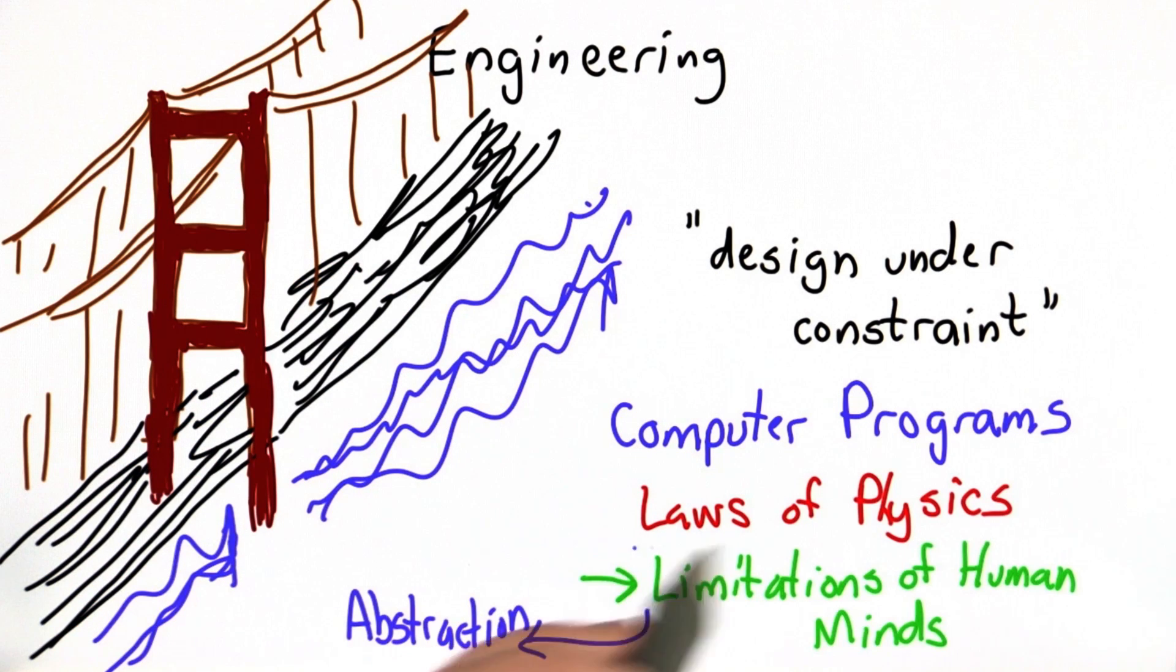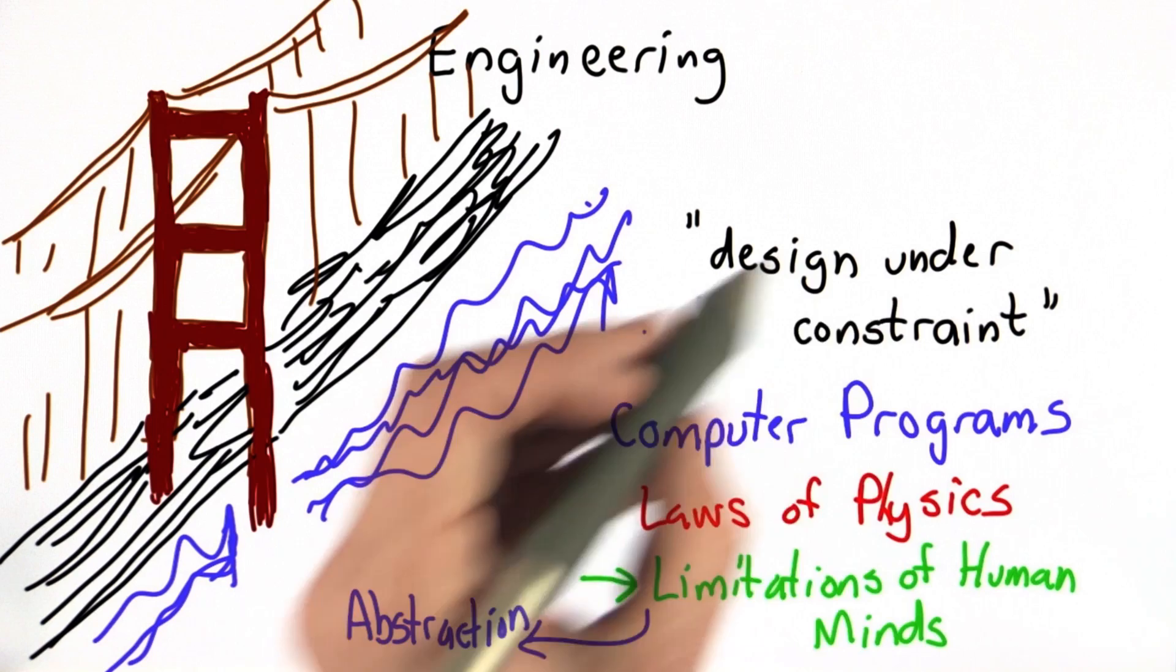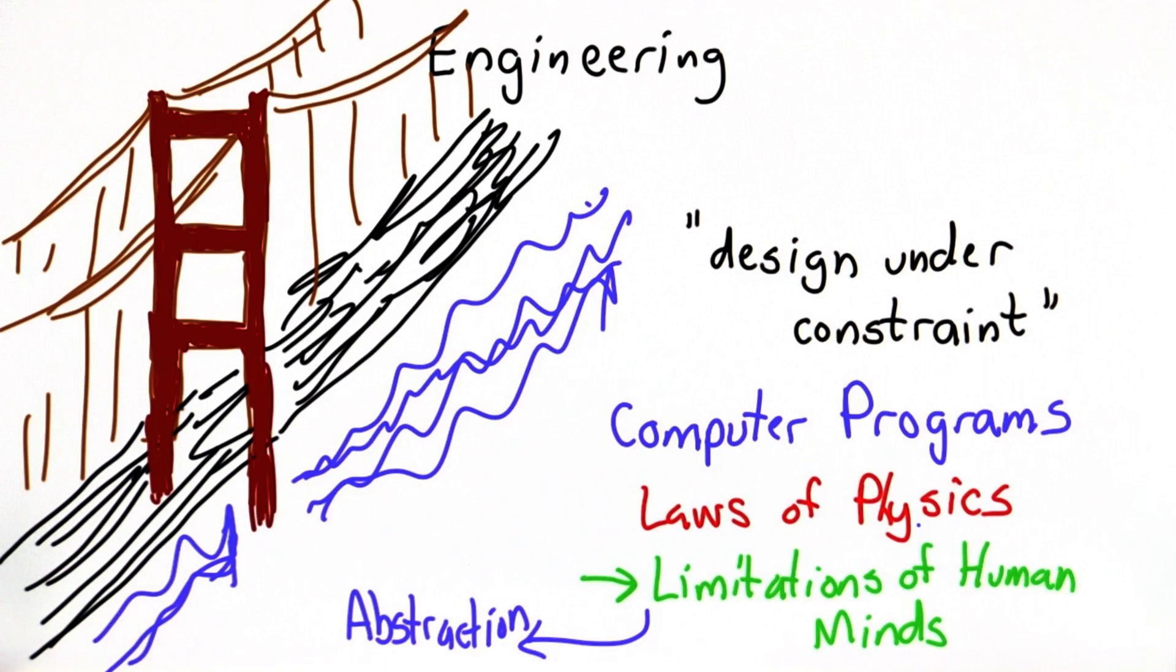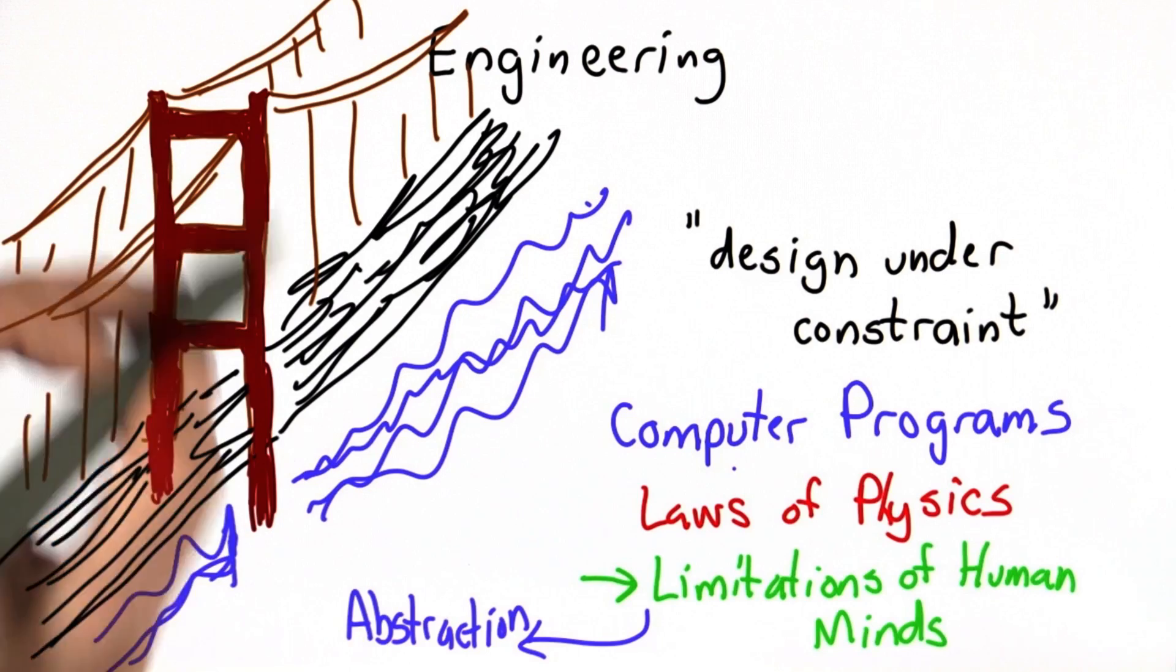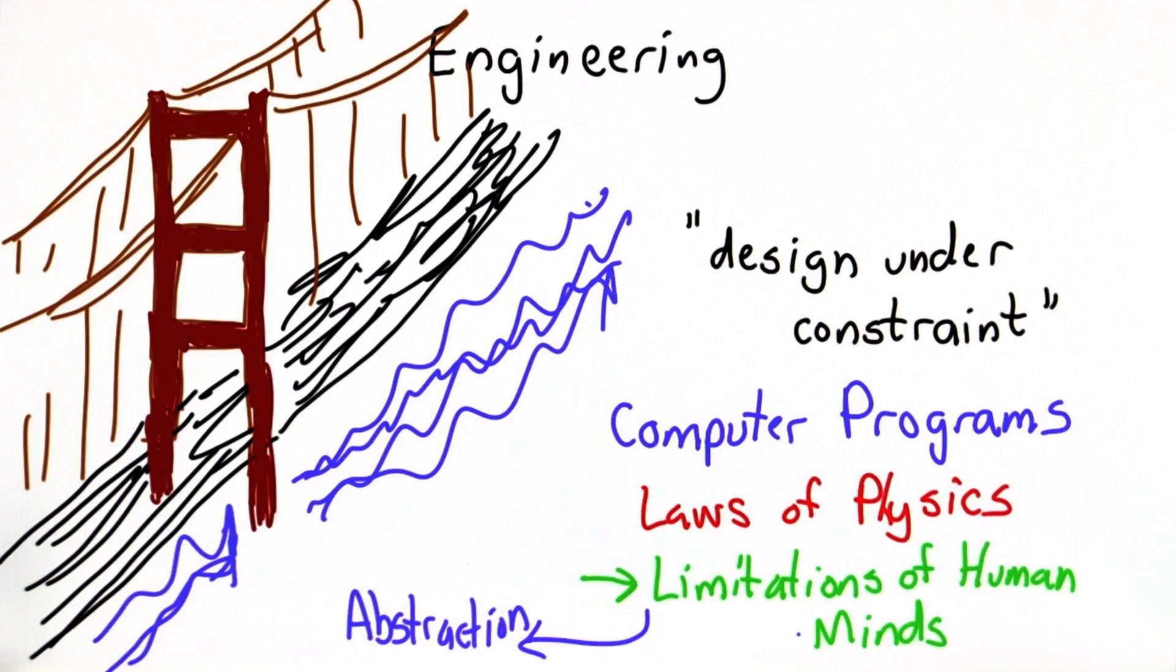Well, that's all about using abstraction to overcome the limits of human minds in terms of how much we can keep in mind and understand at one time. So from that perspective, computer science is definitely about engineering. We certainly want to build things. We're not building things like bridges, and we're doing that under constraints, but the main constraints are not from the laws of physics because we're not building physical things, but from the limits of our own minds.